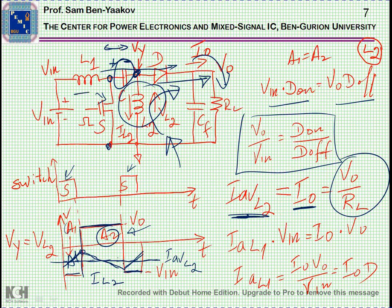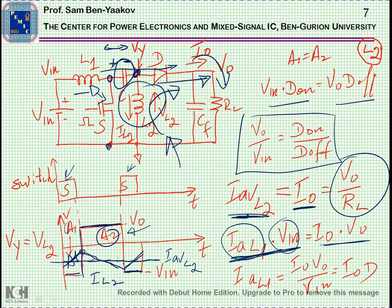What about the average current of L1? Assuming losses are low — which our analysis is based on — the power coming from the input, which is the average current times Vin, equals the power delivered to the output, which is I_out times Vout. So you can calculate the input inductor current as I_out times D, which makes sense: if D is high, you have a higher voltage at the output, so you need a higher current at the input to get the correct power.